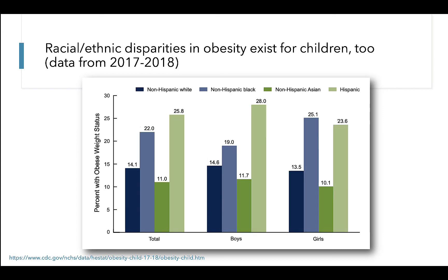It should be noted that there are also significant sociodemographic disparities in obesity among children as well. These graphs mirror the format we saw for adults, with data for boys and girls combined or broken out by boys versus girls, and different racial and ethnic categories represented in different colors. We see a significantly higher prevalence of obesity for non-Hispanic Black children as well as for Hispanic children.